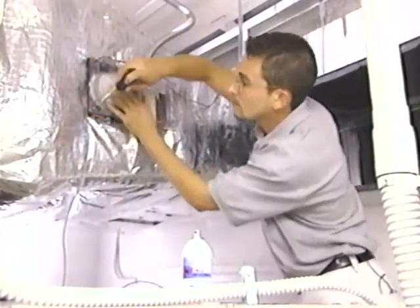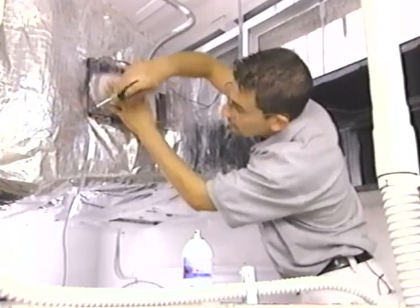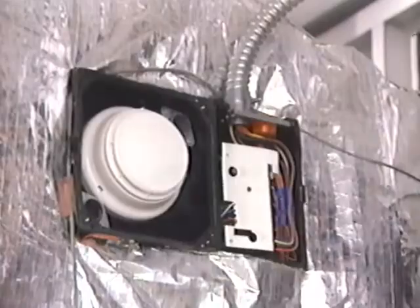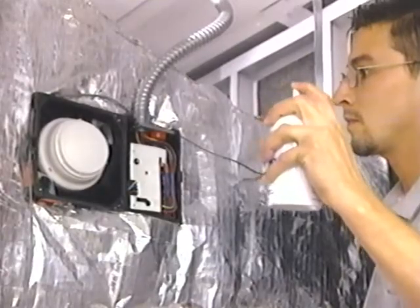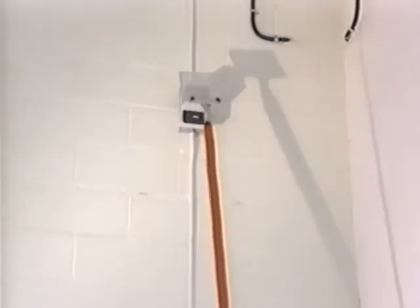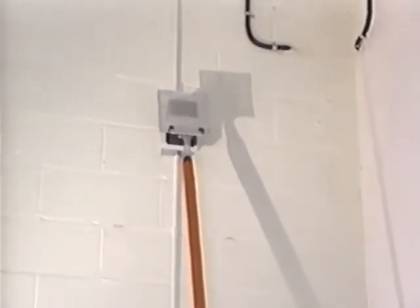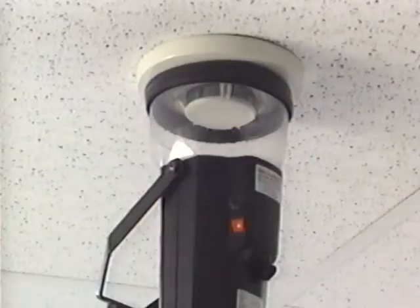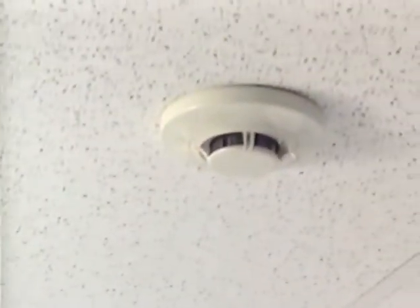Air duct smoke detectors and air sampling smoke detectors should be tested following manufacturer's recommendations — generally functional tests that introduce smoke or aerosol to the detector. Projected beam smoke detectors should be tested with a calibrated card or filter according to the manufacturer's instructions. When an initiating device is a combined smoke detector and heat detector, both elements should be tested independently following manufacturer's recommendations.